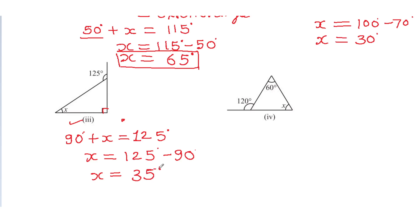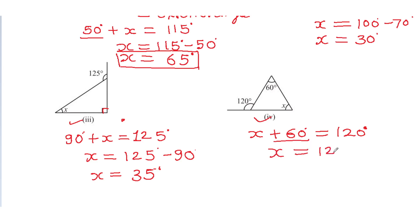Now let's look at the fourth figure. x plus 60 degrees is equal to 120 degrees. To find x, subtract 60: 120 degrees minus 60 degrees. So x is equal to 60 degrees.